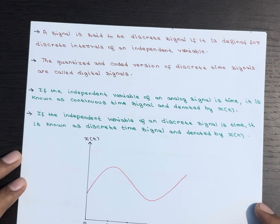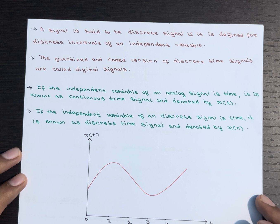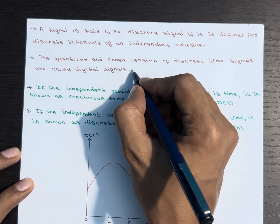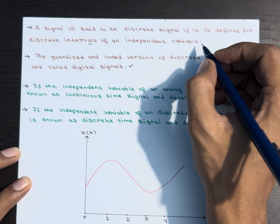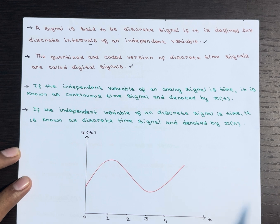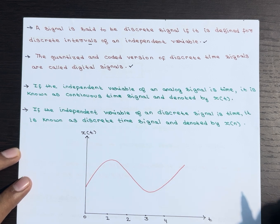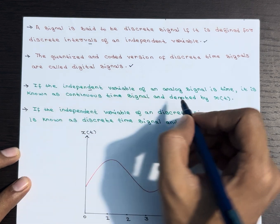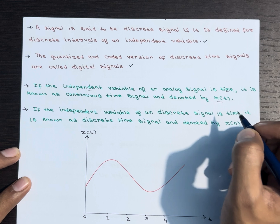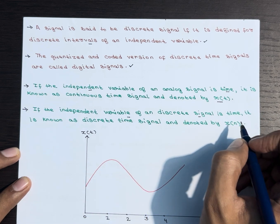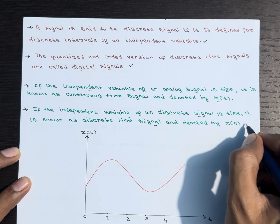On the other hand, a discrete signal is one that is defined for specific discrete intervals of an independent variable. When a discrete time signal is quantized and coded, it becomes a digital signal. If the independent variable of an analog signal is time, it is known as a continuous time signal and denoted by x(t). Similarly, if the independent variable of a discrete signal is time, it is known as a discrete time signal and denoted by x(n).